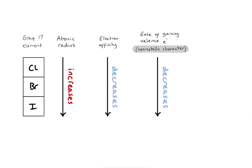This is specifically what we refer to as non-metallic character, which also decreases down the group. Chlorine is very good at gaining electrons and has strong non-metallic character. As we move down the group the atoms get bigger, the electrostatic forces of attraction between the nucleus and valence electrons decrease, so they become less and less good at gaining valence electrons. Because group 17 elements ultimately gain a valence electron, their ability to do that decreases down the group, so their reactivity decreases down the group.